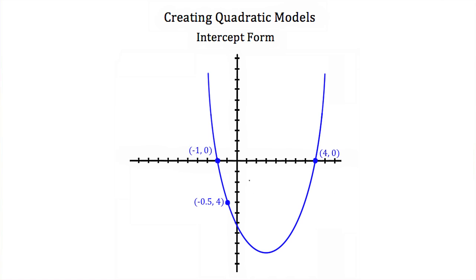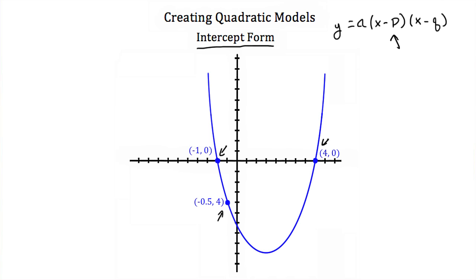Here we have another graph of a parabola, but we're not given the vertex. Instead we're given the two x-intercepts and then one other point on the line. So since we're given the two x-intercepts, the easiest way to come up with our quadratic equation that describes this line would be to use intercept form. Intercept form looks like y is equal to a times x minus p times x minus q, where p and q are x-intercepts.